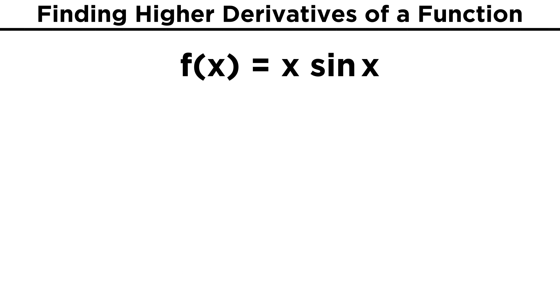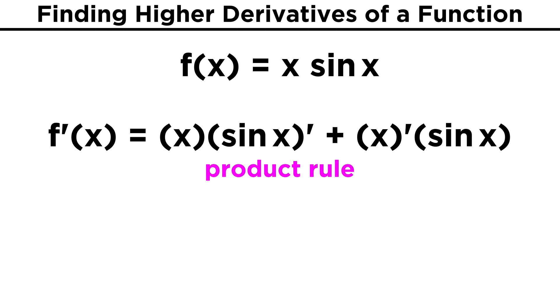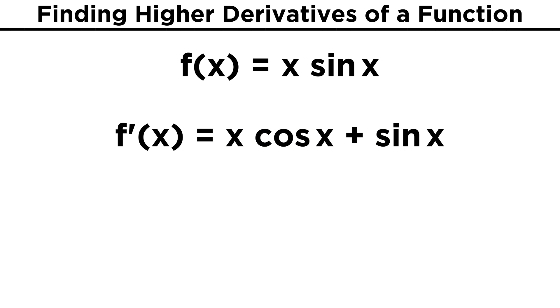Of course, this could get a little trickier. Take x sine x. To get the first derivative, we need the product rule, so remembering how that works from a previous tutorial, let's put the functions where they go, and take these two derivatives. We should get x cosine x plus sine x.